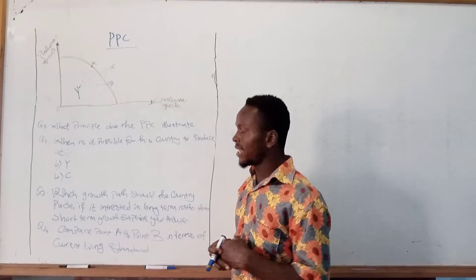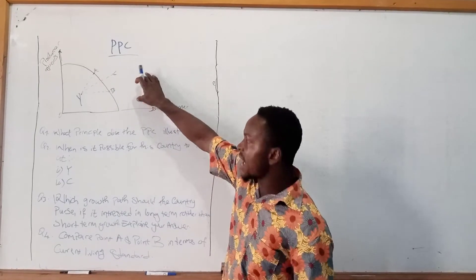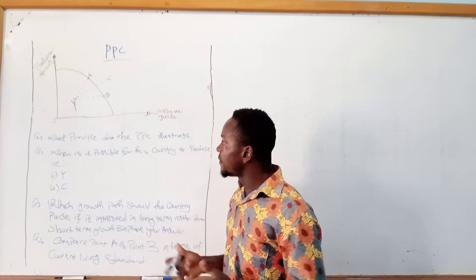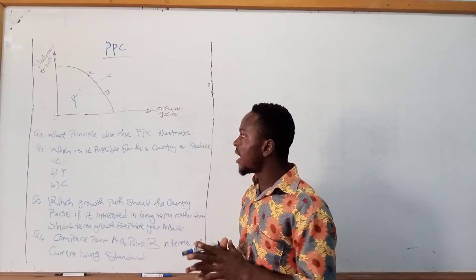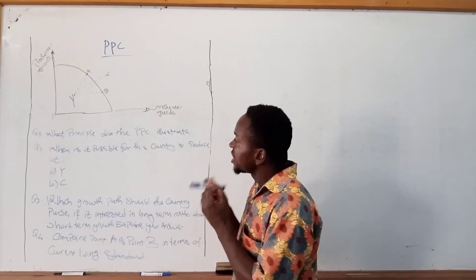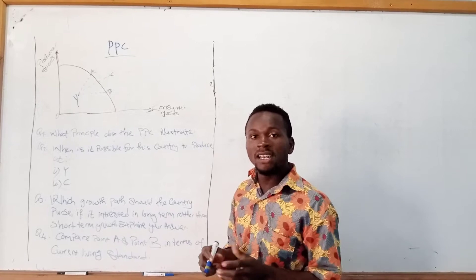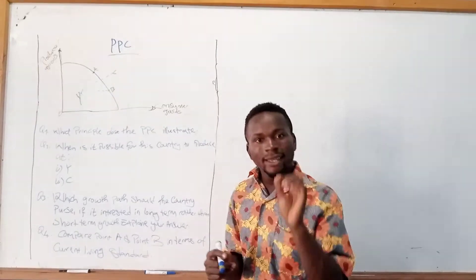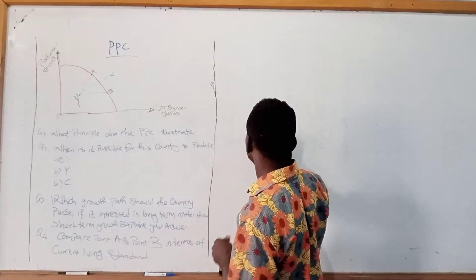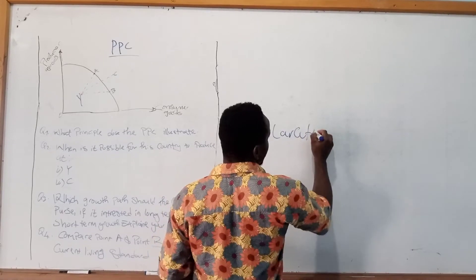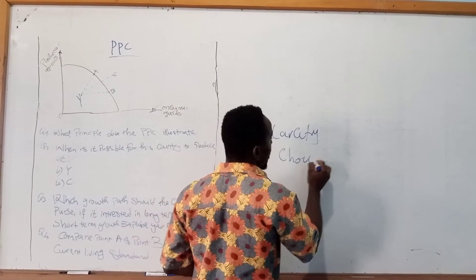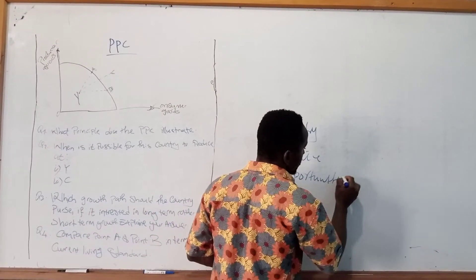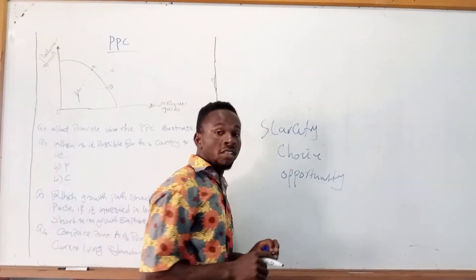This is a question that has been asked before — it has a background and then a specific question. Looking at the question, they ask: what principle does the PPC illustrate? The PPC actually illustrates three principles: the principle of scarcity, the principle of choice, and the principle of opportunity cost.